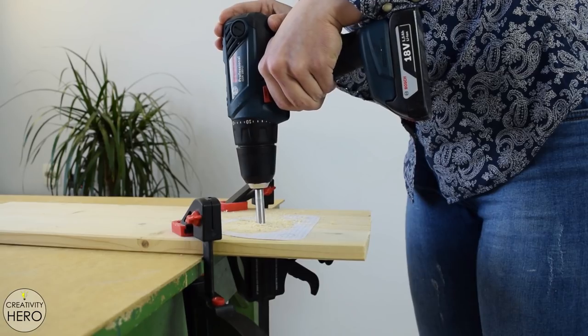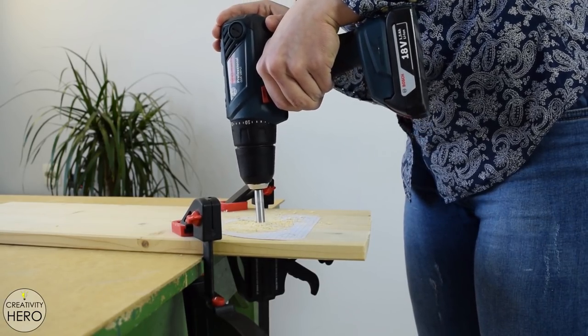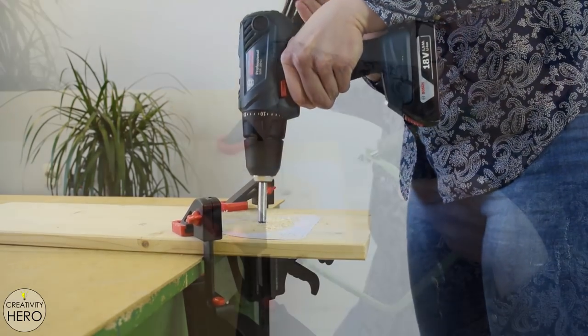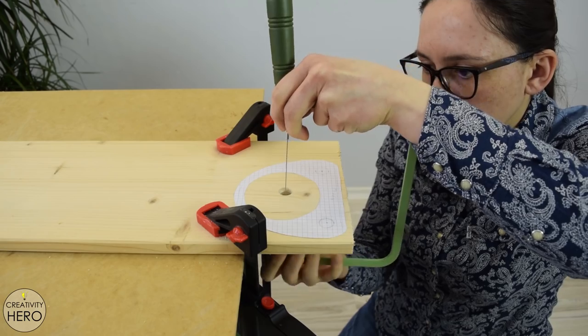First I made a 15 millimeter hole in the middle with a forstner bit which is enough space to fit the coping saw blade. Then I installed the coping saw there and made the opening.